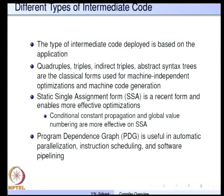A program dependence graph is another type of intermediate code useful for automatic parallelization, instruction scheduling, and software pipelining. It shows the dependence between various statements in the program — for example, if one assignment statement produces variable 'a' and another uses variable 'a', there is a dependence between these two statements, and this type of dependence is useful for automatic parallelization.